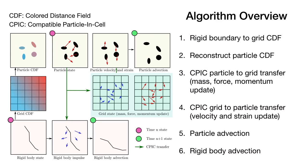The capability of our method is due to the colored distance field, a natural generalization of traditional signed distance field to non-closed and intersecting boundaries. Firstly, we compute grid CDF by rasterizing rigid boundaries. Then, we reconstruct particle CDF using moving least squares. A particle is compatible to grid nodes sharing the same relative position to the boundaries.